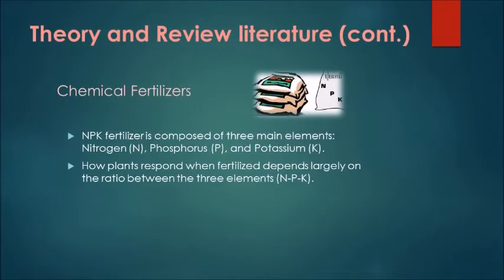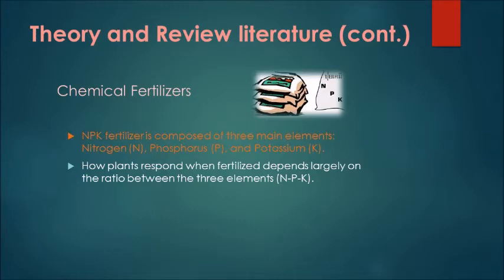Chemical Fertilizers: NPK fertilizer is composed of three main elements — Nitrogen, Phosphorus, and Potassium. How plants respond when fertilized depends largely on the ratio between the three elements, NPK.